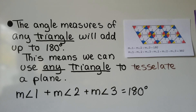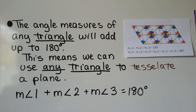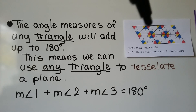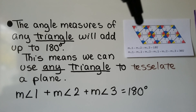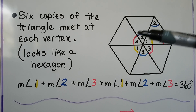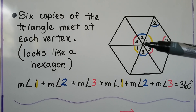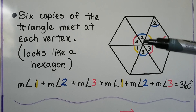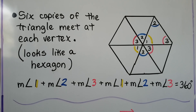The angle measures of any triangle add up to 180 degrees, which means we can use any triangle to tessellate a plane. With angles one, two, and three in the triangle, they total 180 degrees. Six copies of the triangle meet at each vertex — it kind of looks like a hexagon — and adding both sets of angles one, two, and three together at the vertex totals 360 degrees.